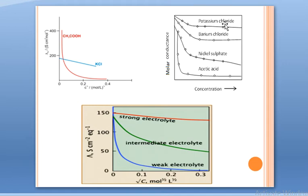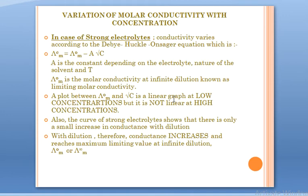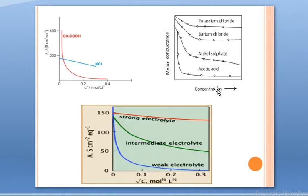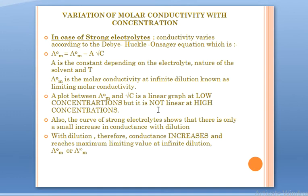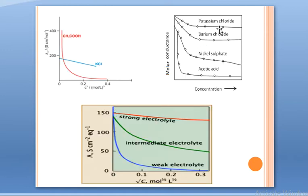For potassium chloride, this is the correct plot: it is a linear graph at low concentrations but it is not linear at high concentrations. When we study this plot of the strong electrolyte KCl — plotting concentration against molar conductance — it is linear only at low concentrations; at high concentrations it is not linear. Since dilution and concentration are opposite terms, with more dilution the curve is less linear, and with less dilution it is linear. Importantly, with dilution there is an increase in molar conductance.